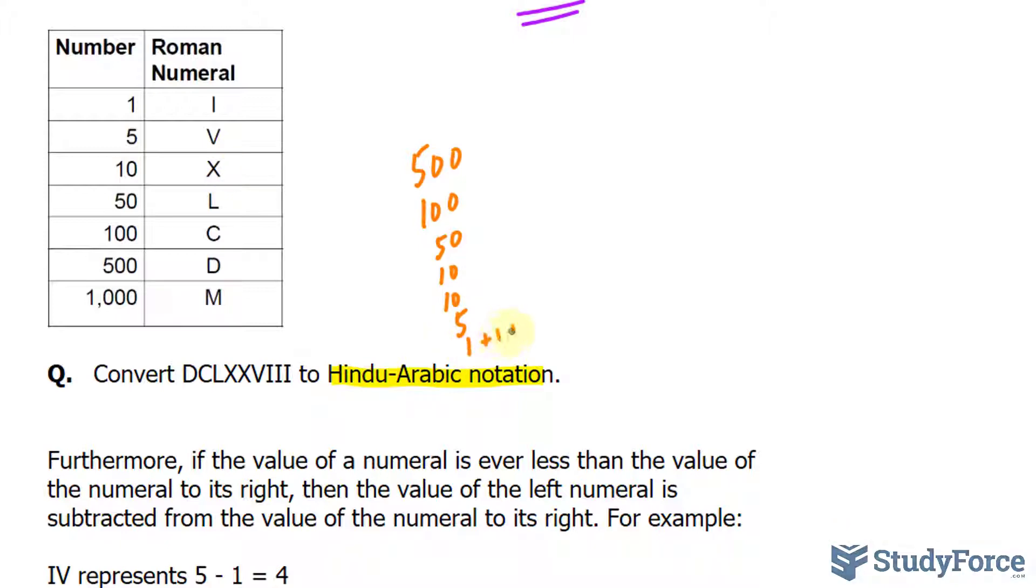So 1 plus 1 plus 1. Adding all these together, we get 600, 50, 10, 70, 75, 78. So 678 is this numeral.